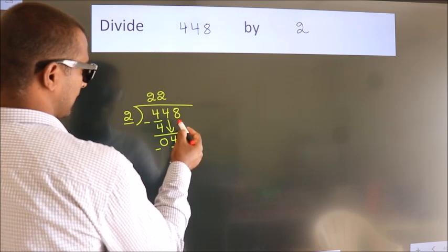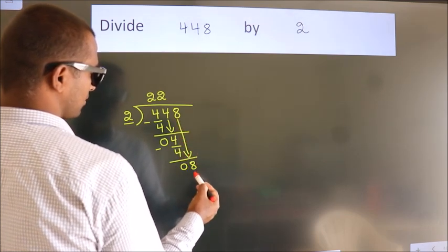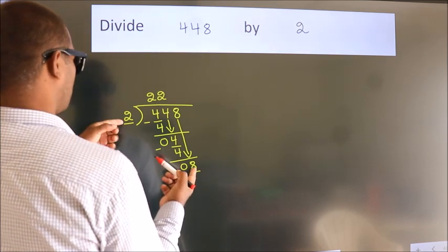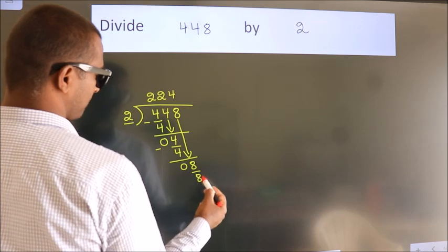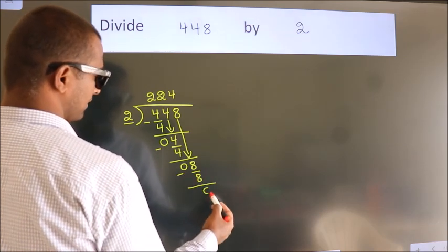After this, bring down the beside number. So, 8 down. When do we get 8? In 2 table. 2 4's 8. Now, we subtract. We get 0.